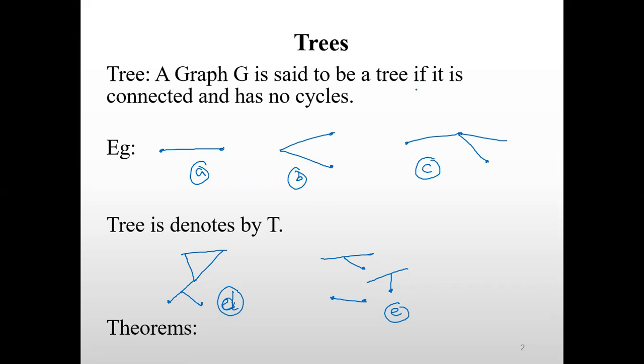Here, according to the definition of the tree, a tree should be a connected graph and also it should not contain any cycle. And here you can observe there is no isolated vertex and the vertices present in the graph are connected. And here you can observe there is no cycle in the graph. Hence, this graph can be considered as a tree.